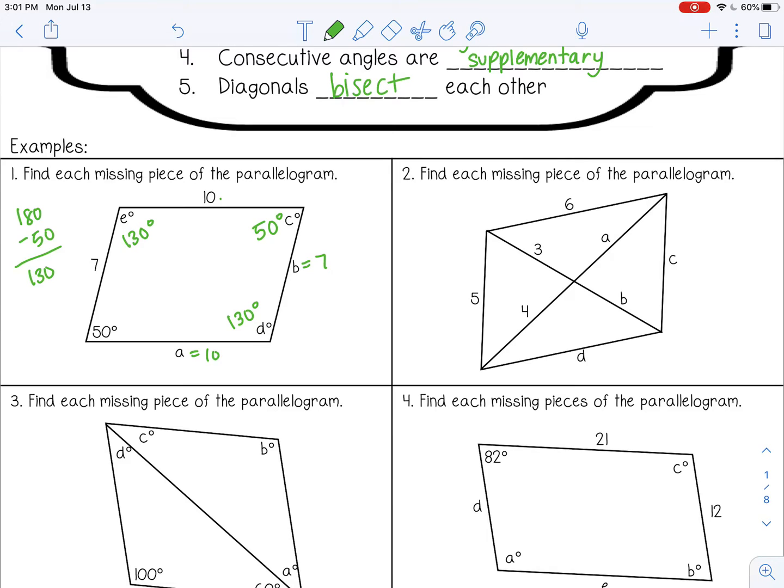All right, number two: find each missing piece of the parallelogram. So again, opposite sides are the same—five and five, six and six. Diagonals will bisect each other, so the diagonals will be cut into two equal pieces. So three and B are equal in length, and four and A are equal in length.